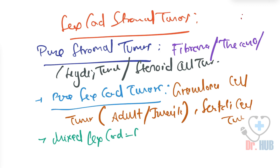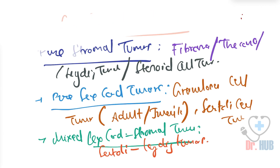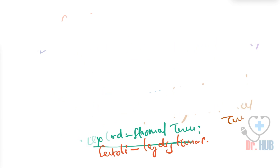After this, there is also the mixed sex cord stromal tumors category. This includes the Sertoli as well as the Leydig tumors. Now we will be looking further at the germ cell tumors.